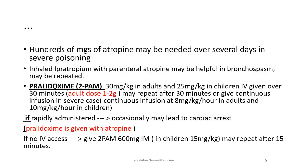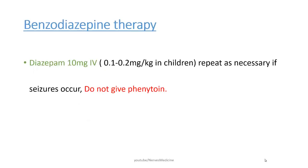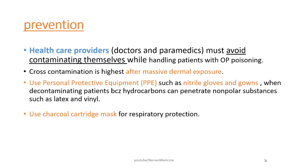If rapidly administered, pralidoxime can lead to cardiac arrest, so it is better to give pralidoxime with atropine. If no IV access, you can give pralidoxime 600 mg — in children 15 mg per kg — and may repeat after 15 minutes. For benzodiazepine therapy: diazepam 10 mg IV, or 0.1 to 0.2 mg per kg in children, repeat as necessary if seizures occur. Do not give phenytoin.